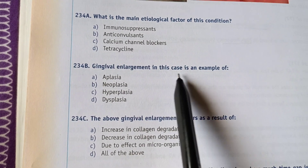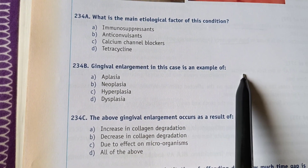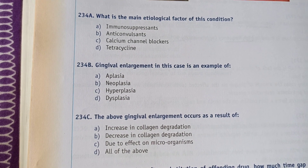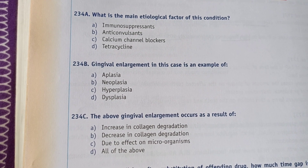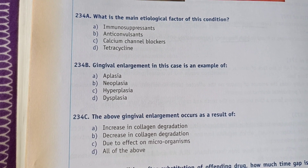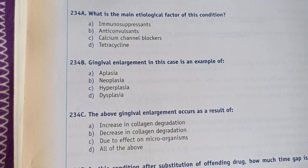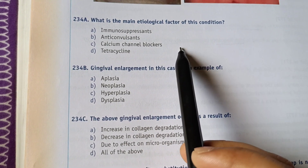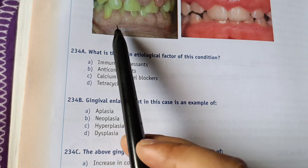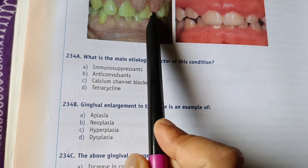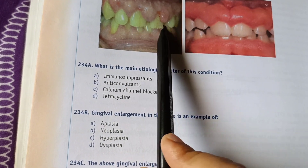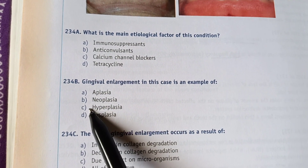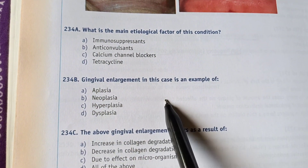Next question: gingival enlargement in this case is an example of what? Options are: A) aplasia, B) neoplasia, C) hyperplasia, D) dysplasia. This is a condition of gingival hyperplasia — there is an enlargement of the gingiva. So the right answer is option C — hyperplasia.